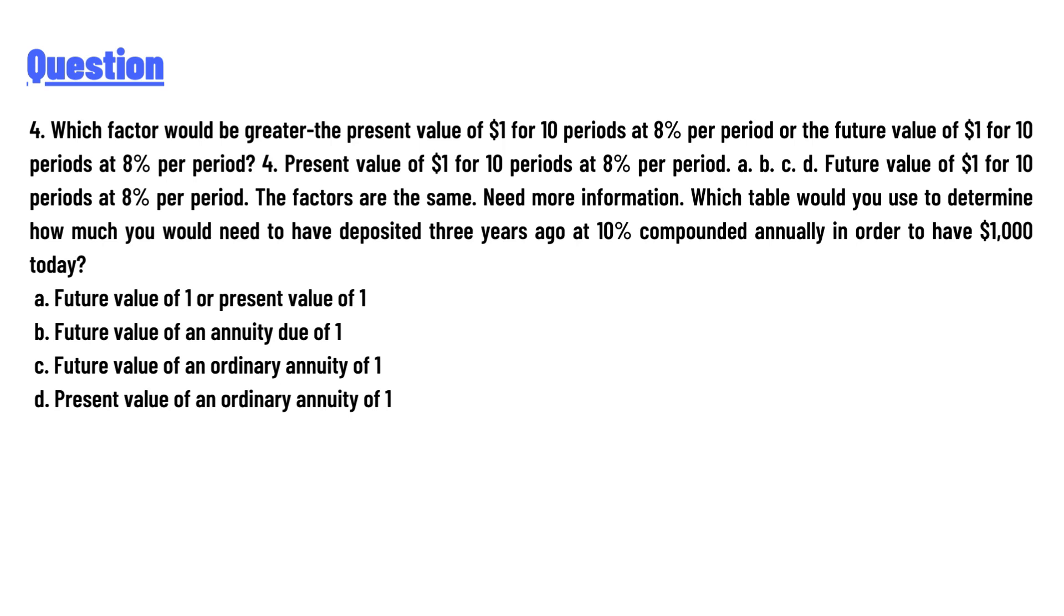A: Future value of 1 or present value of 1. B: Future value of an annuity due of 1. C: Future value of ordinary annuity of 1. D: Present value of an ordinary annuity of 1. And the answer: